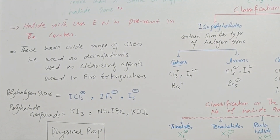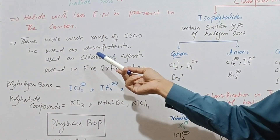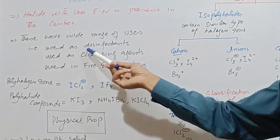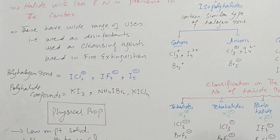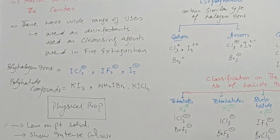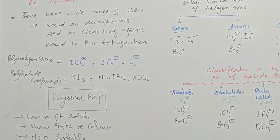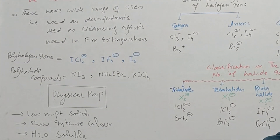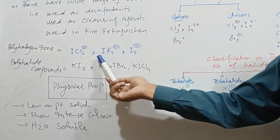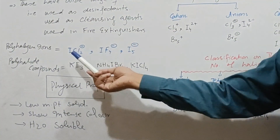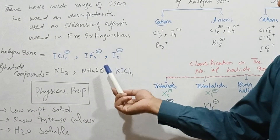Polyhalide compounds have a wide range of uses, for example as disinfectants, as cleansing agents, and in fire extinguishers. Examples of polyhalide ions include ICl2⁻, IF4⁻, and I5⁻.